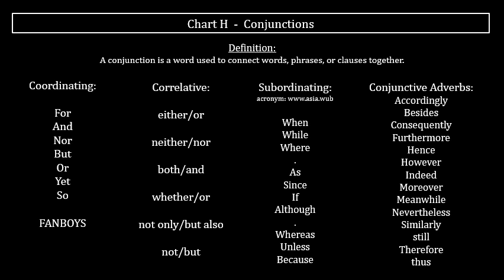Coordinating conjunctions connect grammatically equal words or groups of words, such as compound subjects, compound verbs, or compound sentences. The coordinating conjunctions are: for, and, nor, but, or, yet, so.